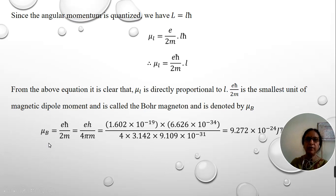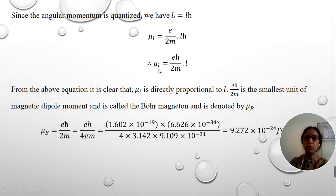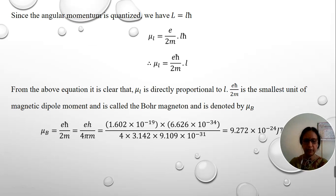We can calculate the value of Bohr magneton by substituting the constant values, giving 9.272 × 10⁻²⁴ joule per tesla. To calculate the magnetic moment of the electron due to orbital motion, multiply the Bohr magneton value by the quantum number l. This is all about the derivation of magnetic dipole moment due to the orbital motion of the electron.